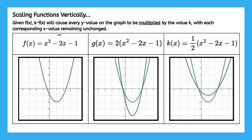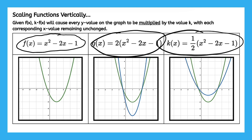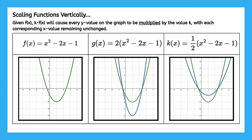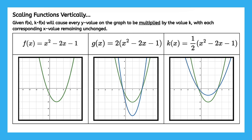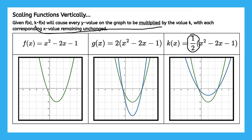Let's use the example of this graph f of x equals x squared minus 2x minus 1. Now g of x and k of x are a couple of examples of f of x that has been scaled in different ways. What did we do to f of x to get g of x? You can see that the only difference is that we multiplied the entire function by 2. So k is 2 in this case. And then in the next example, we just multiplied the entire function by 1 half. So k is 1 half.